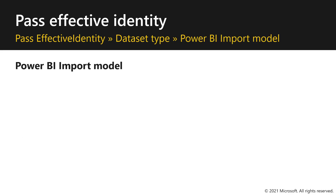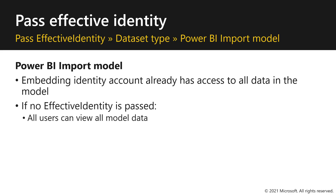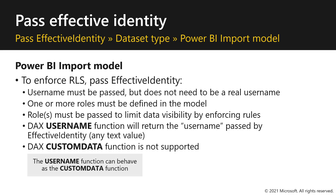For a Power BI import model, the embedding identity account already has access to all the data in the model. If no effective identity is passed, all users can view all model data. To enforce row-level security, pass effective identity. The username must be passed but does not need to be a real username. One or more roles must be defined and passed to limit data visibility. The DAX username function will return the username defined in the effective identity object. The custom data function is not supported, but note that the username function can behave as the custom data function, because you can control the value returned by the username function.